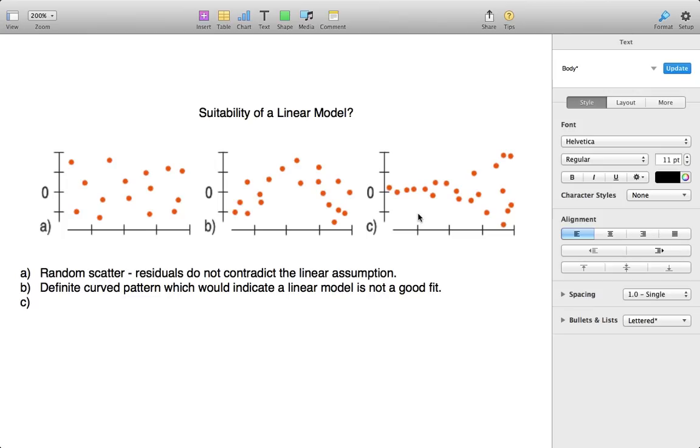Now in part C, it looks like there's very little scatter about the regression line early on, but then as we get out further into the x direction, there seems to be a great deal of scatter. So what we might say here is that the regression or linear regression...